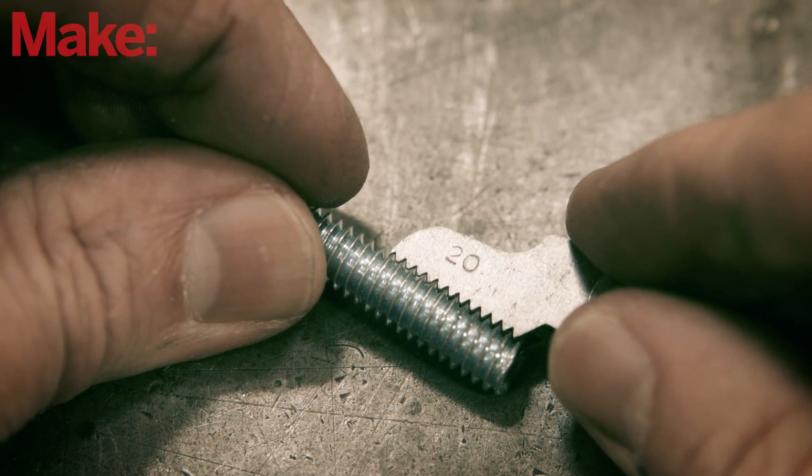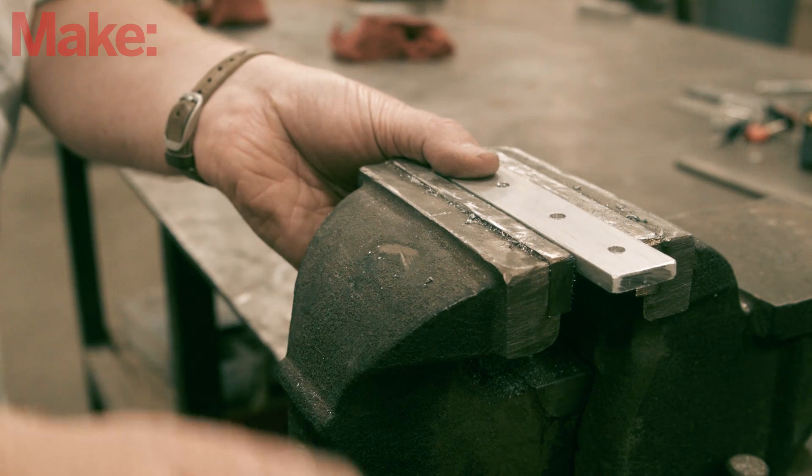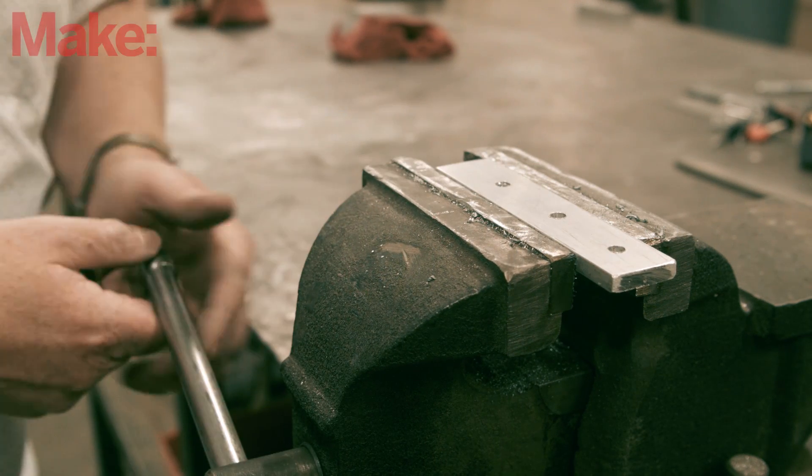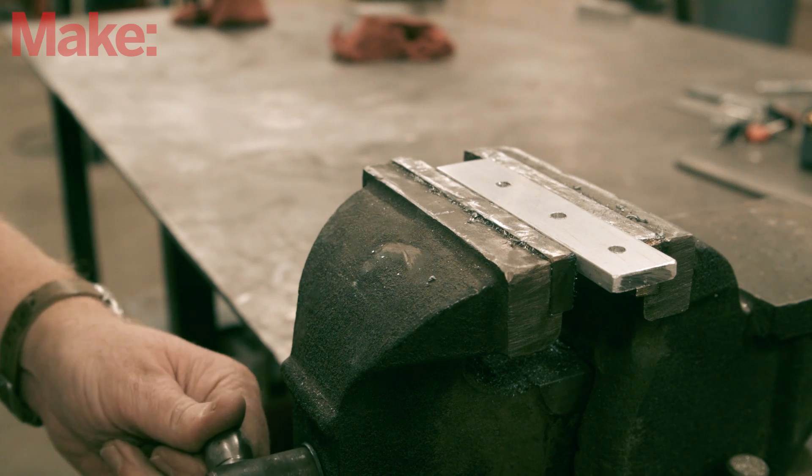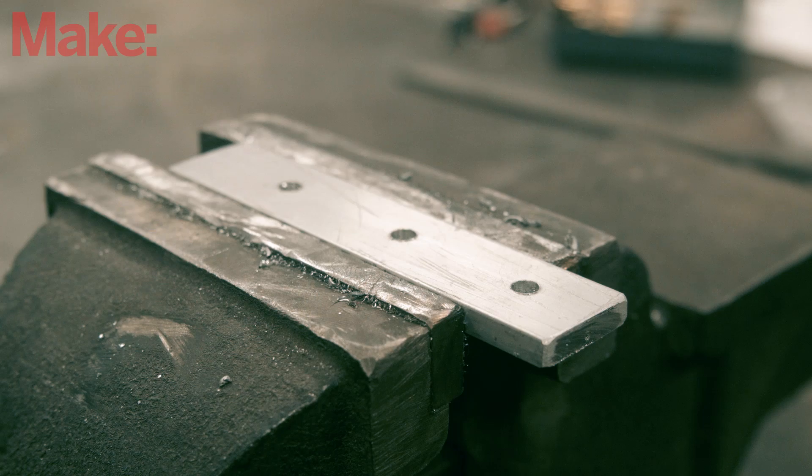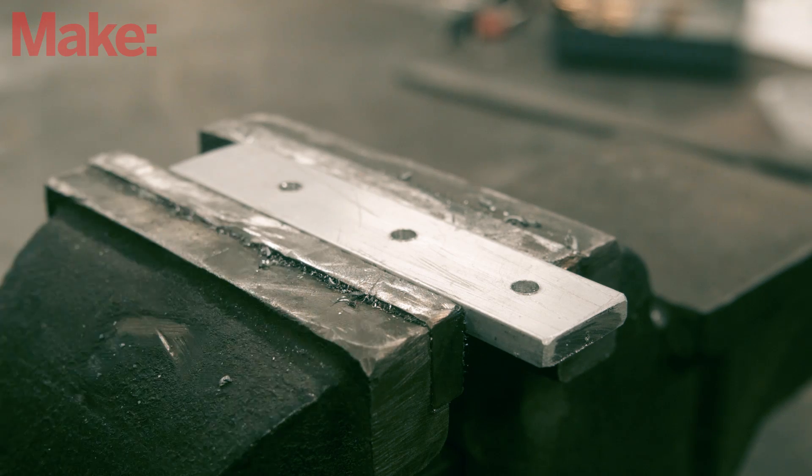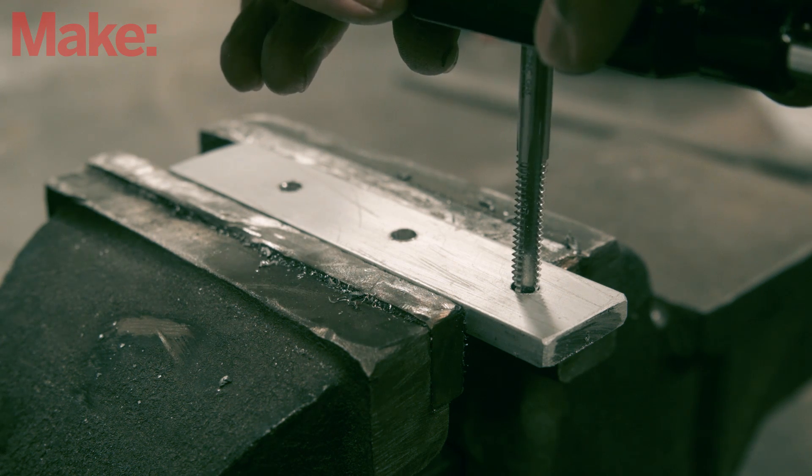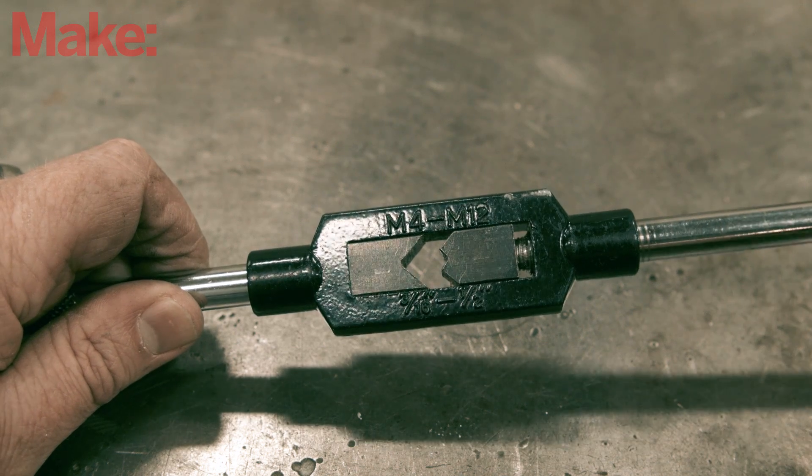Make sure you secure the piece to be tapped. This is one of the most important parts. Taps are very brittle, so if your tap or material moves too much, it will break off the tap in the hole. To avoid that, it's a good idea to use a vise to secure your material and align the hole so it's either directly below you or directly in front of you.